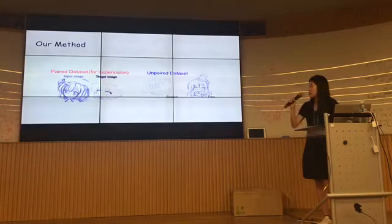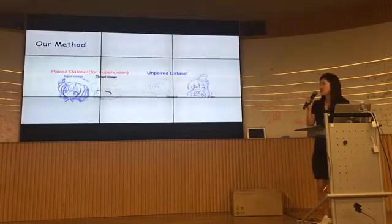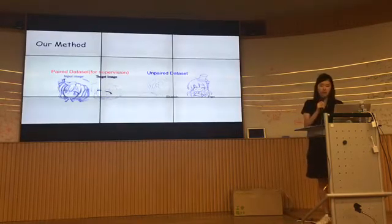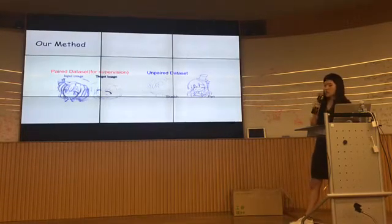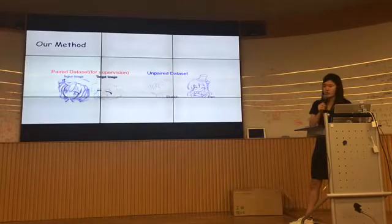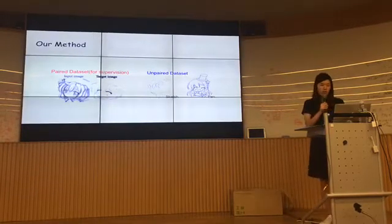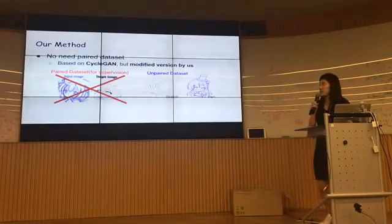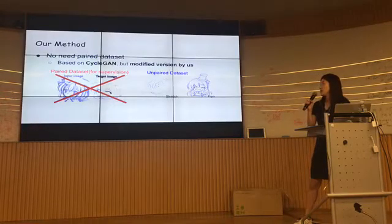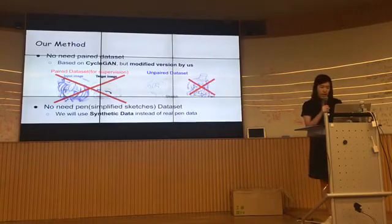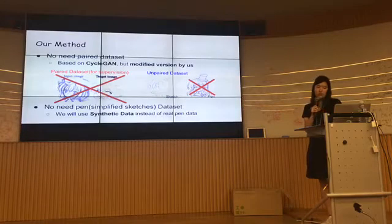There are two types of datasets: paired datasets used by previous work, and unpaired datasets. In our method, we don't need paired data because we use a fully unsupervised approach based on a modified CycleGAN. Also, we don't need a real pen dataset because we use synthetic data instead.